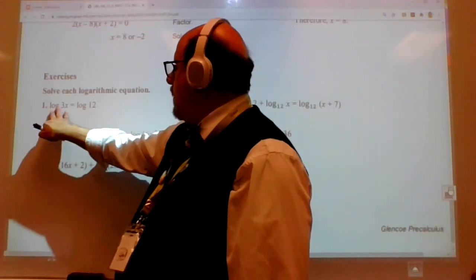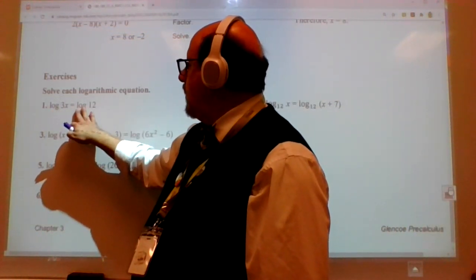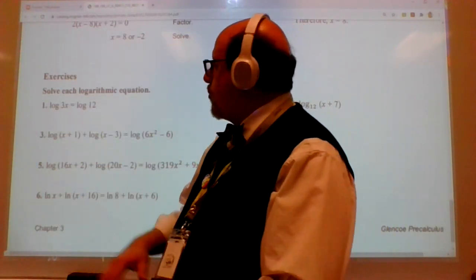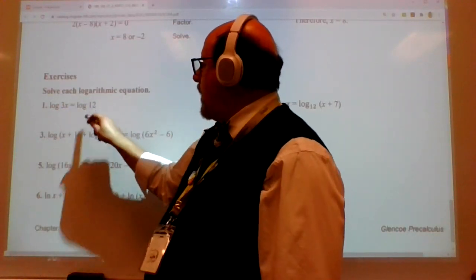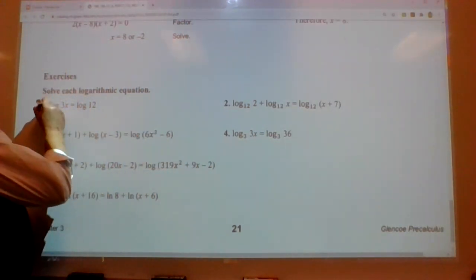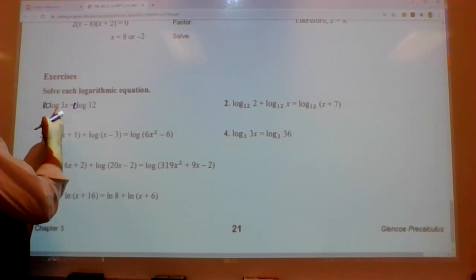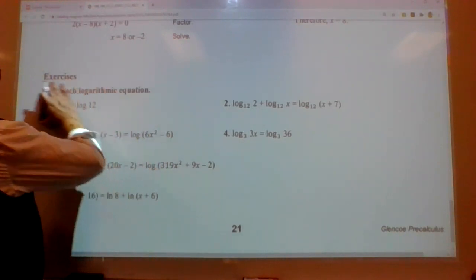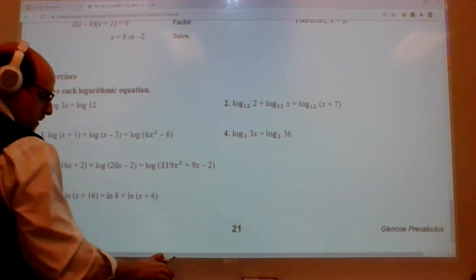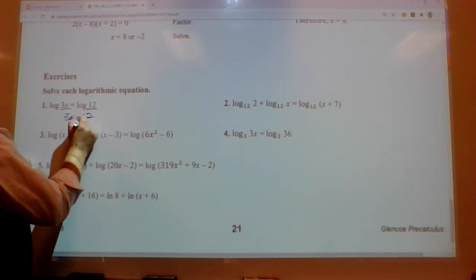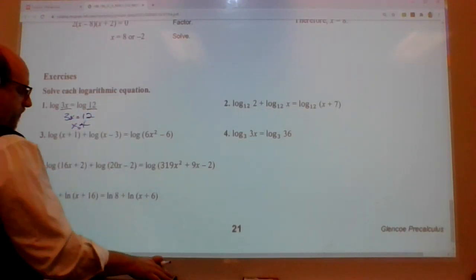Same base. This is a 1 to 1. All we're going to do is drop the log and say 3x equals 12. Right? Because we could very well just multiply both sides by 10. 10 times the common log is 1. All right? But we didn't do that. We know that if it's a 1 to 1 equation that all we have to do is solve that. So 3x equals 12, x equals 4. Very simple idea.